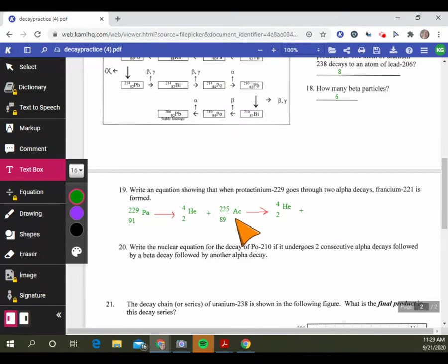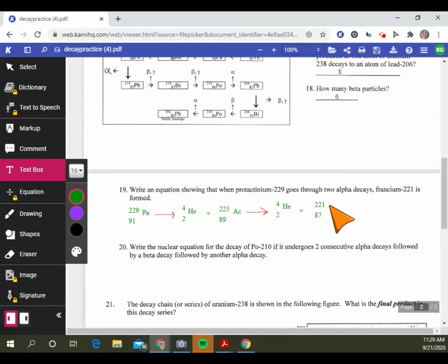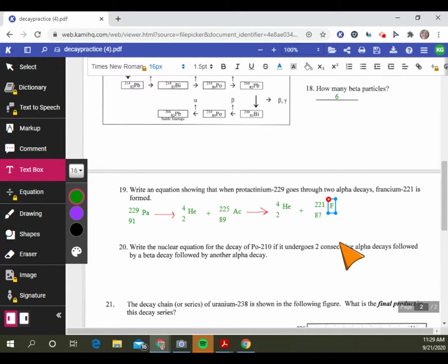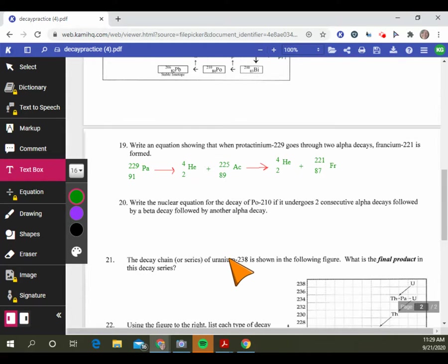229 loses 4 and that makes 221. 89 loses 2 and that makes 87. So element number 87 is in fact francium. And so that's what you would come up with. You're going to do the same kind of thing for number 20.